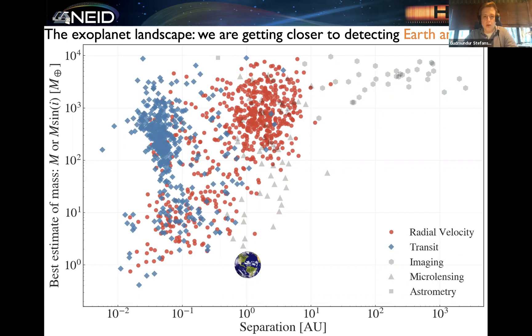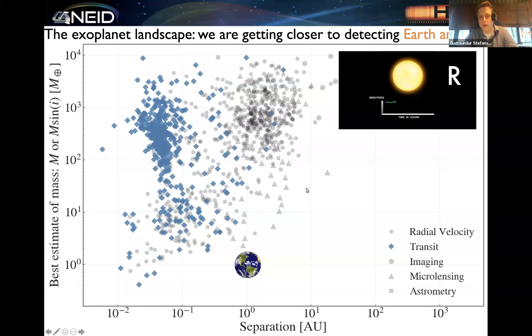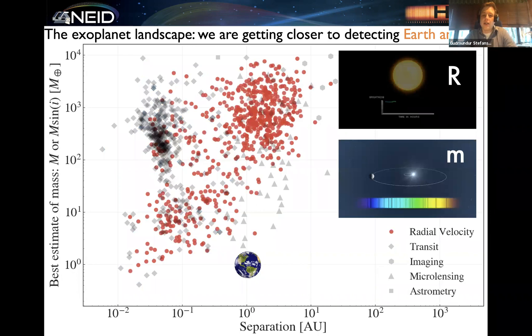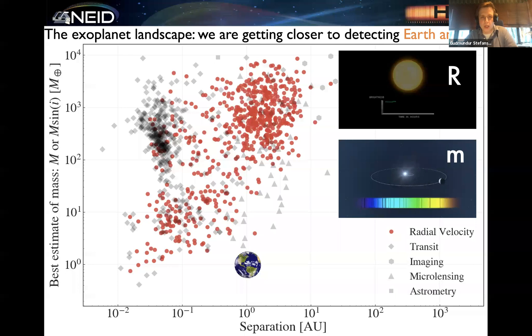The transit method relies on measuring the minuscule dip in flux as a planet crosses in front of the stellar disk. This gives us a wealth of information about the planet, and in particular about the radius of the planet. With respect to Doppler radial velocities, this relies on trying to measure the minuscule wobble of a star due to an orbiting planet, and this is one of the most effective ways we have to measure exoplanet masses.